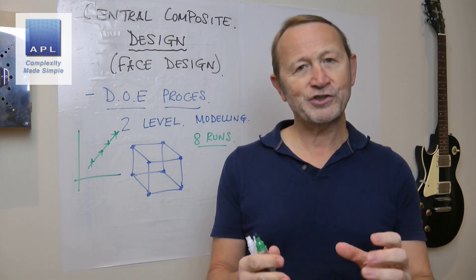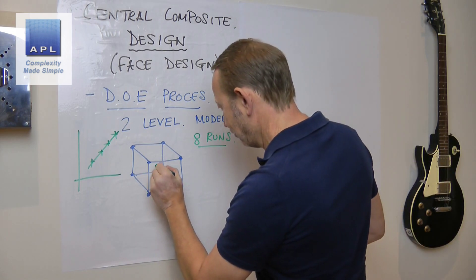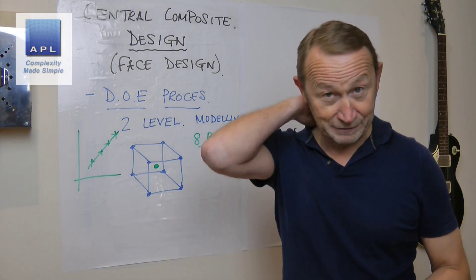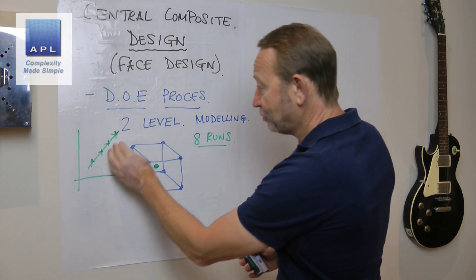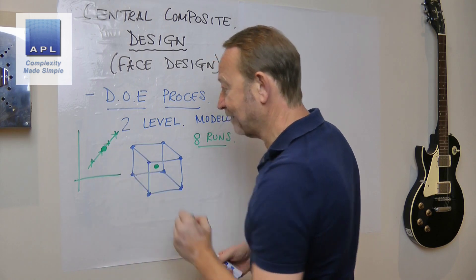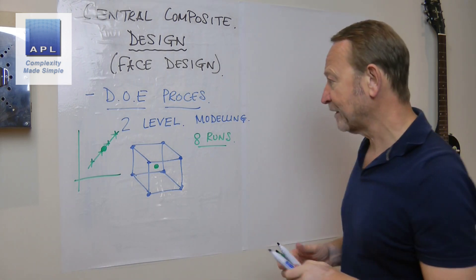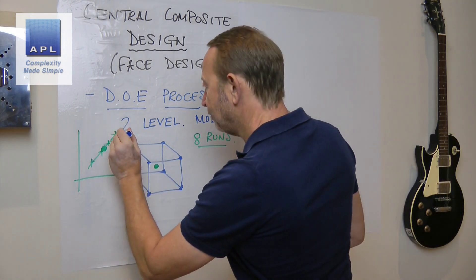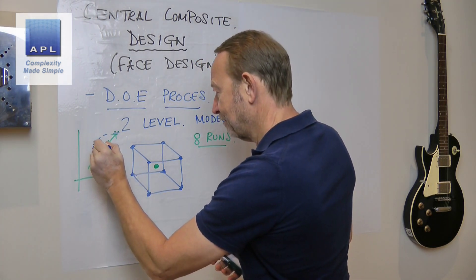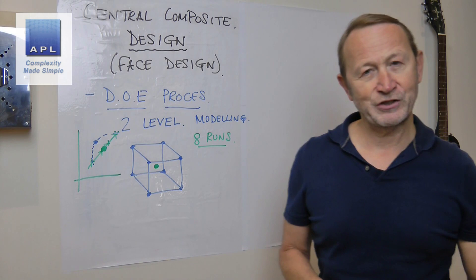Now, my strategy then is to confirm at the midpoint. So I do a test effectively slap bang in the middle of that pattern. Because if this line is true, then of course, when I try to hit that point, if it's genuinely a straight line, I of course will and I get confirmation. But if it's really curved, because I don't land on the green line, I land up here somewhere. And this is the point where I use the face design.